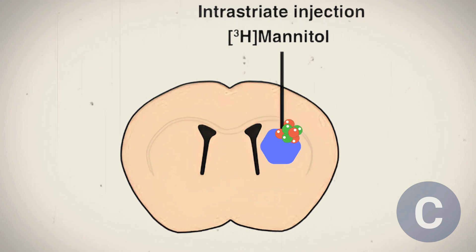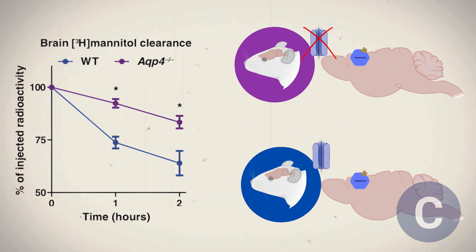After two hours, the results showed that in AQP-4 null mice, mannitol clearance was reduced by 70% compared to wild-type mice, highlighting the importance of aquaporin-4 in helping clear solutes from the brain. These results show that aquaporin-4 plays an active role in the cleanup process of brain interstitial fluid.